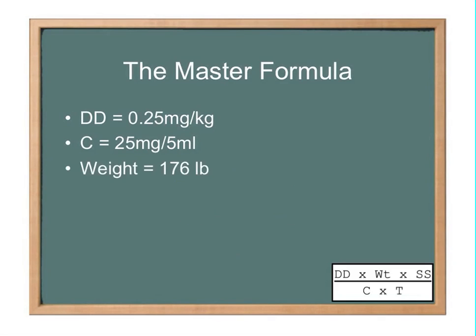So our patient, let's say is 176 pounds. Let's quickly convert that into kilograms. 176 divided by two is 88. The first number in 88 is of course eight. So we subtract eight from that. And we get an answer of 80 kilograms.